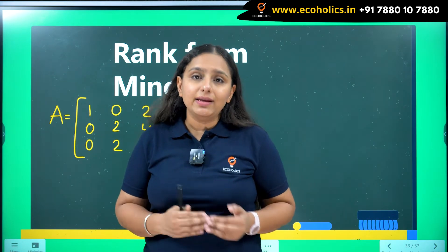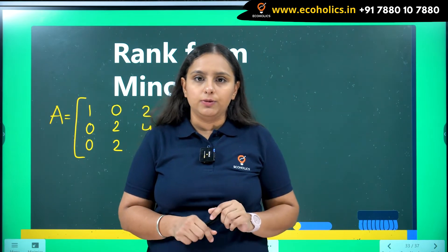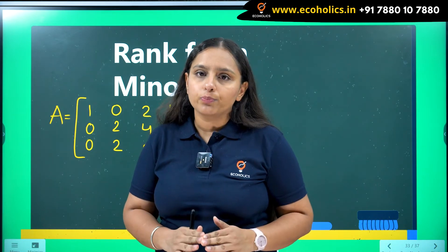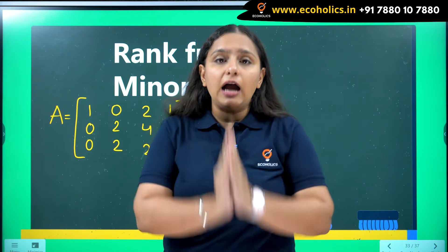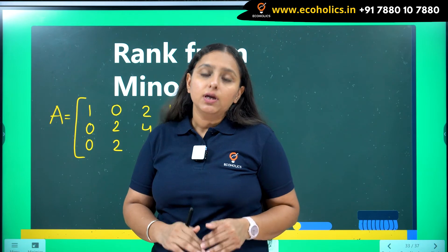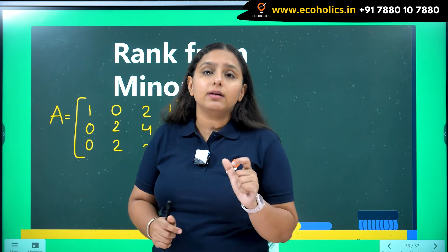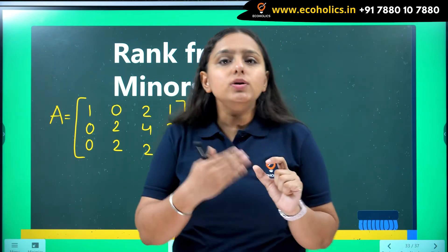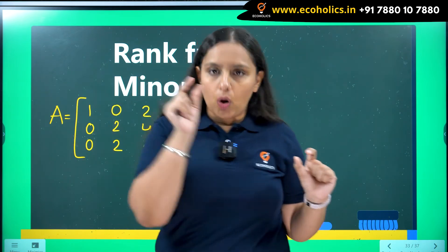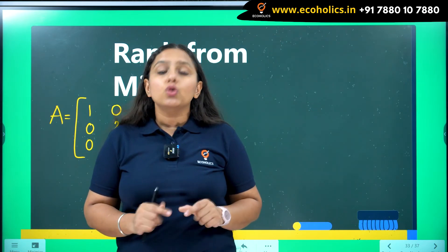Through the minors method, you start with the largest order minor. If all the largest order minors are equal to zero, you go to the next order minor, and you continue this process until you get a non-zero minor. As soon as you get a non-zero minor, you note the order of that minor and the rank will be equal to that order.